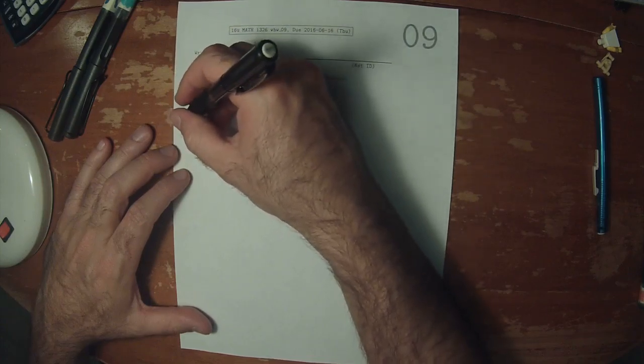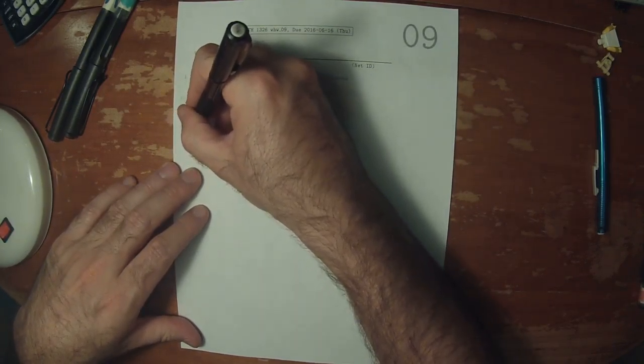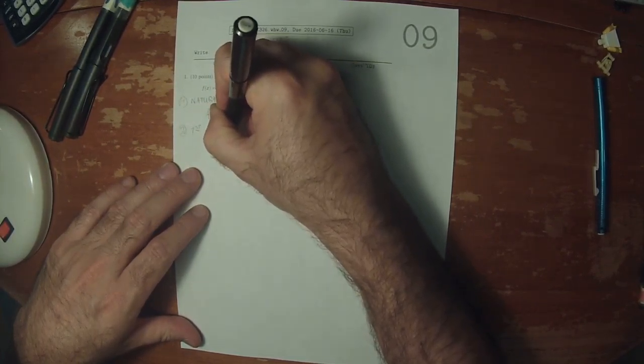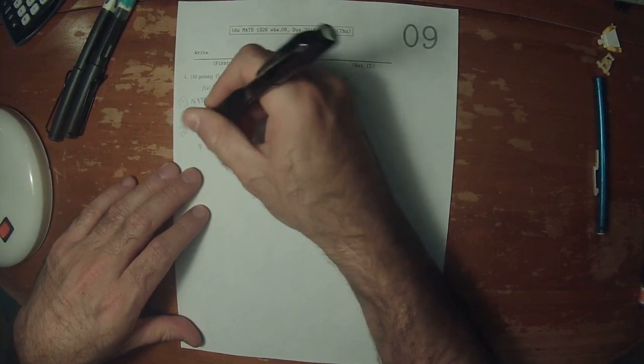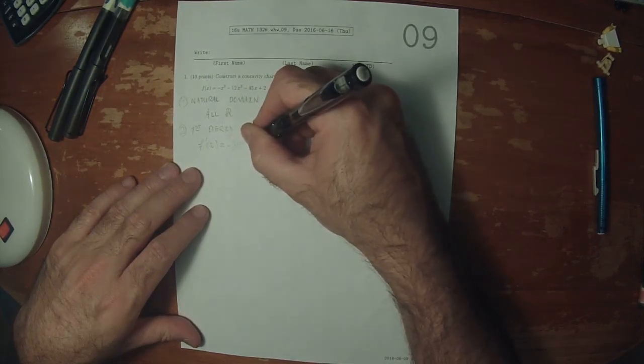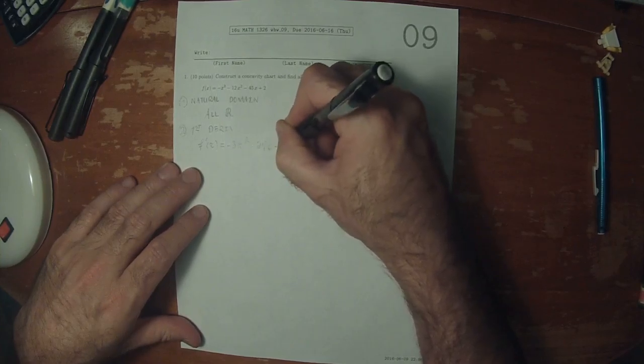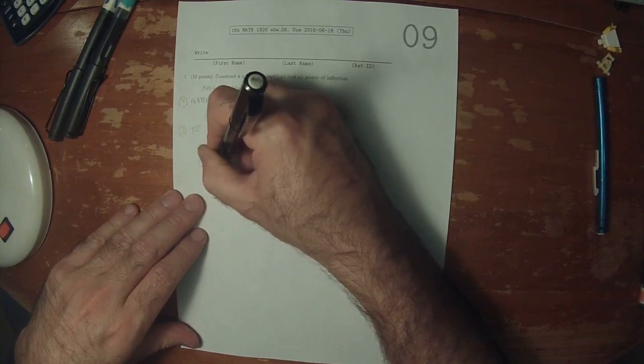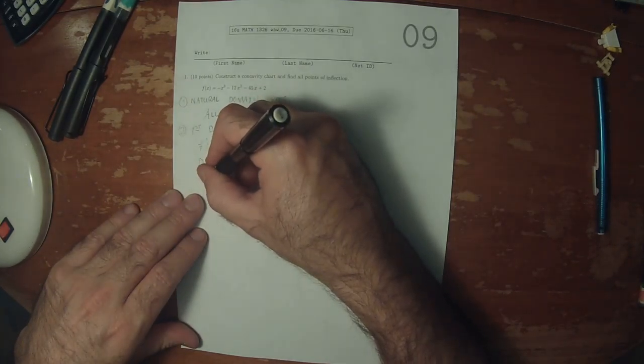Next, we need to find the first derivative. The first derivative is negative 3x squared minus 24x minus 45. We need to check, was there any change in the domain? Because the derivative is a polynomial, there was no change.